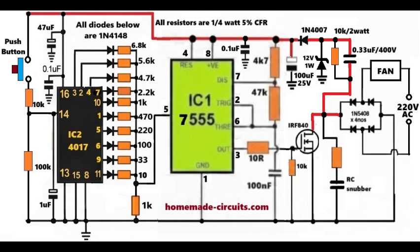Next comes the 4017 decade counter stage. Pin 14 of the 4017 receives the clock pulse from the push button network. Every valid pulse moves the output one step forward. We can use outputs Q0 to Q9, depending on how many speed steps we want.